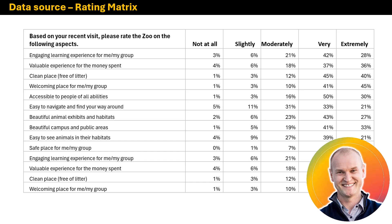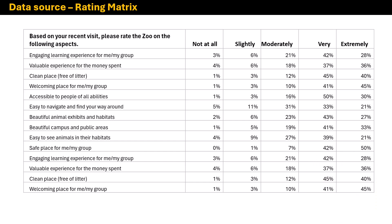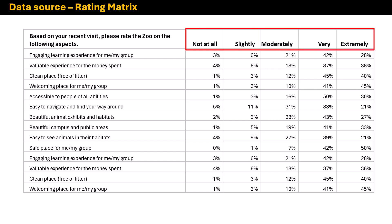Hey everybody, this is Nick, and we're going to make a chart that will visualize a survey scale rating. This is a Likert-type scale from a zoo, and we ask visitors to rate their experience on different characteristics on a five-point scale from not at all, slightly, moderately, very, and extremely.